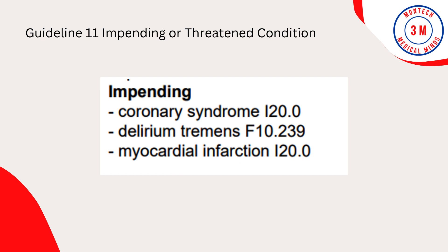Guideline 11: Impending or Threatened Condition. Code any condition described at the time of discharge as impending or threatened as follows: if it did occur, code as a confirmed diagnosis. If it did not occur, reference the Alphabetic Index to determine if the condition has a sub-entry term for impending or threatened, and also reference main term entries for impending and for threatened. If the subterms are listed, assign the given code. If the subterms are not listed, code the existing underlying conditions and not the condition described as impending or threatened.